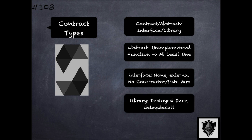Libraries are meant to be deployed only once at a specific address, and the callers call the libraries using the delegate call opcode. This means that if library functions are called, their code is executed in the context of the calling contract. Libraries are specified using the library keyword. These contract types are encountered very often when you look at smart contracts in Solidity.